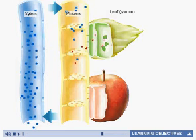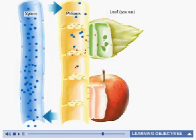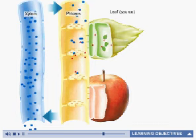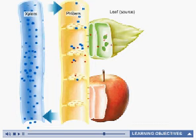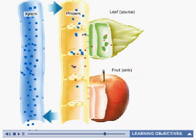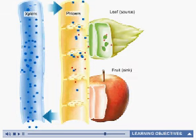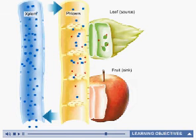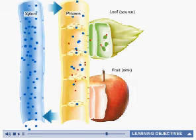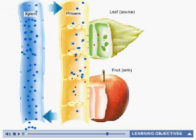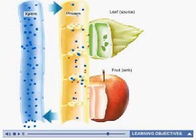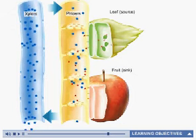A sink is an area where sugars are used or stored. Roots, meristems, and fruits are sinks. While the direction of xylem transport is usually from roots to leaves, the direction of phloem transport is from leaves, or sources, to sinks.